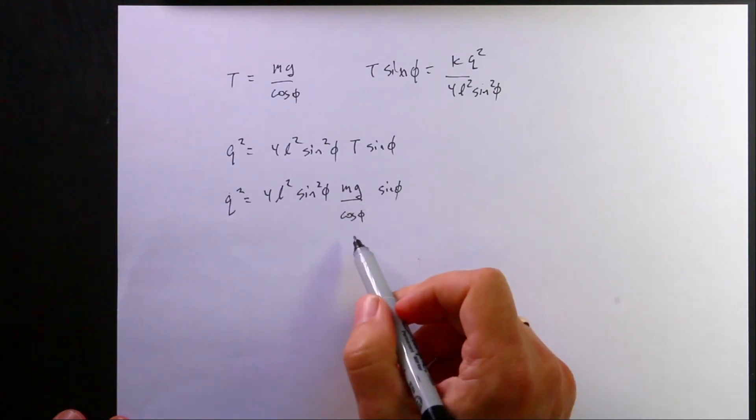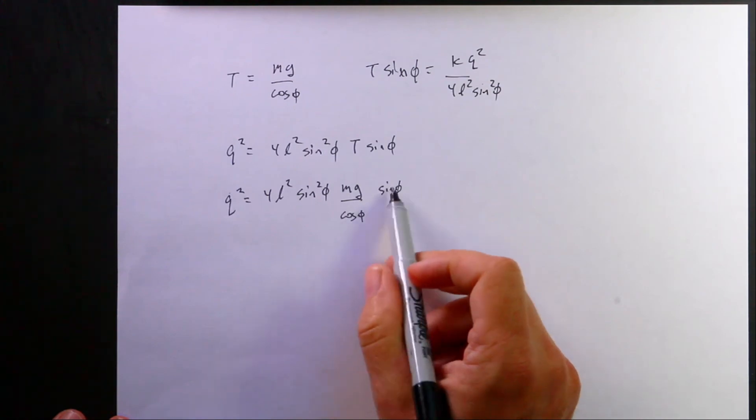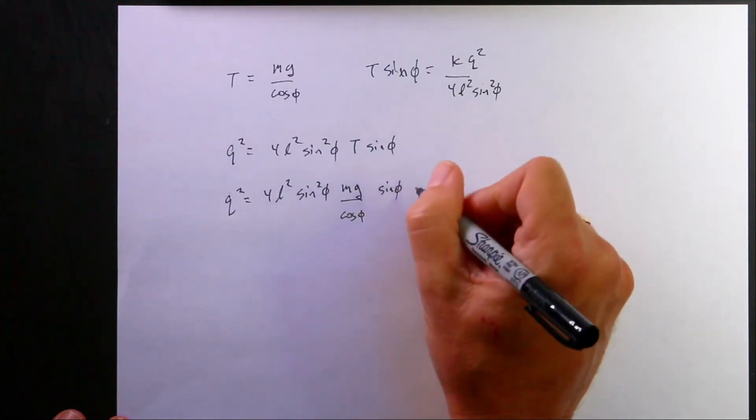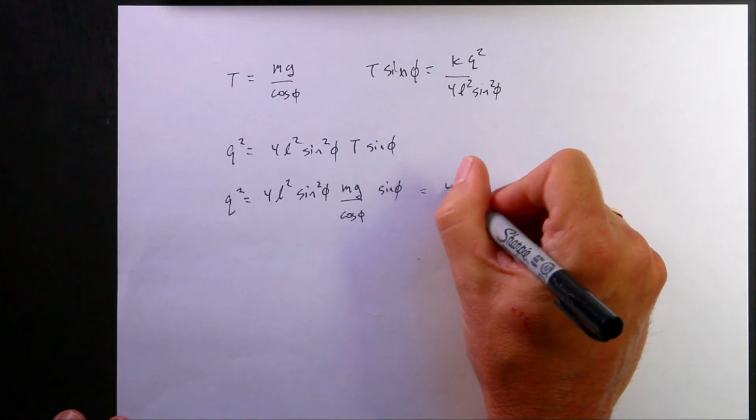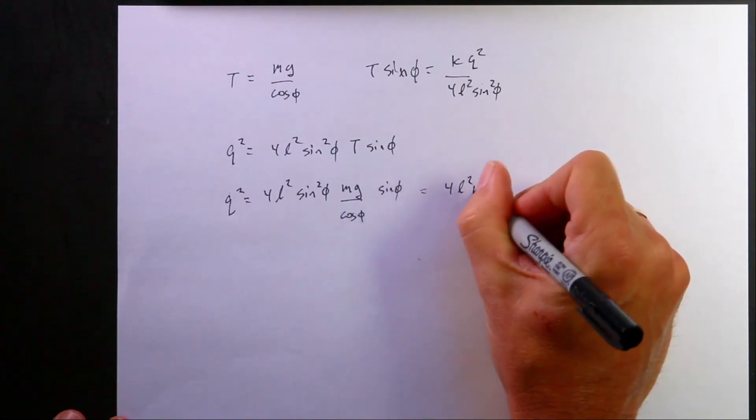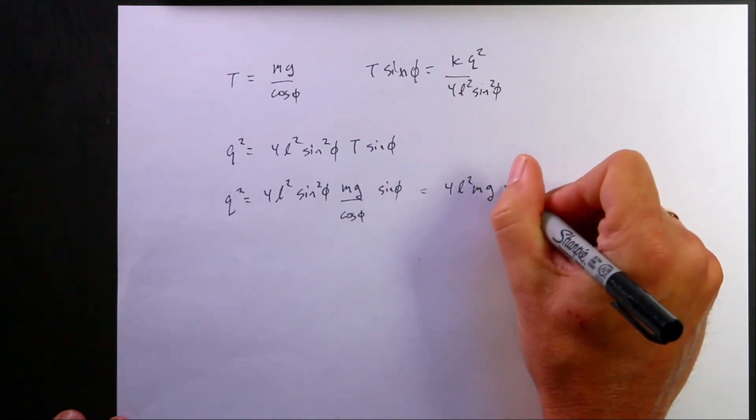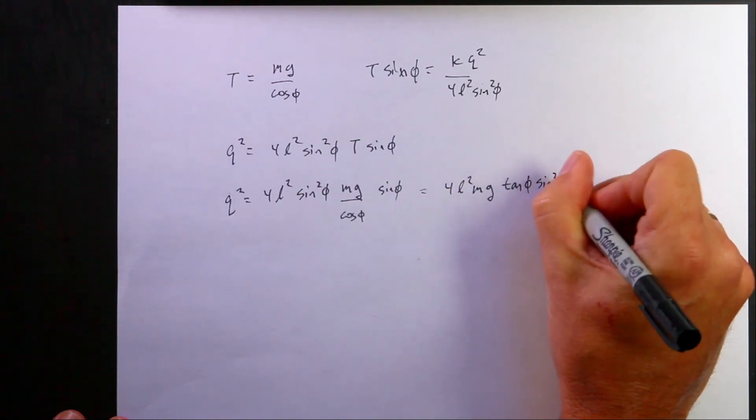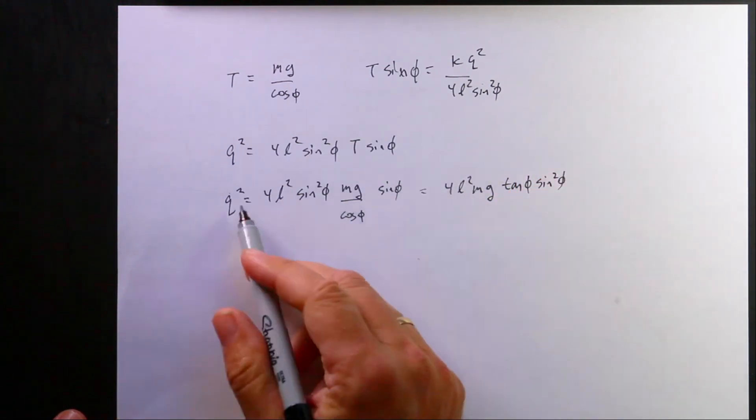Now I have sine over cosine. I mean I could write this in a couple of different ways. Let's just write this as, I guess I'll write that as tangent phi. So this is going to be equal to 4L squared Mg tangent phi sine squared phi. And that's the charge squared.